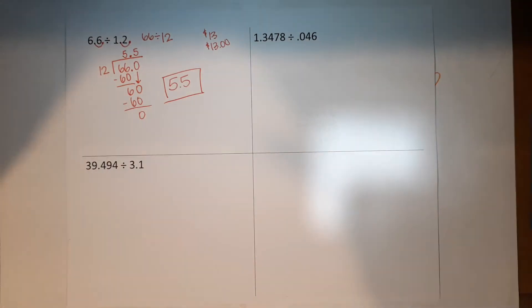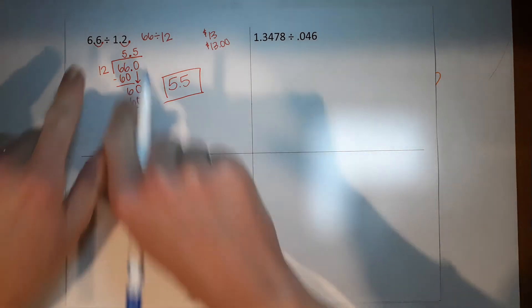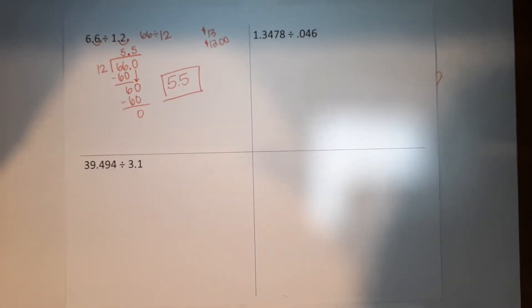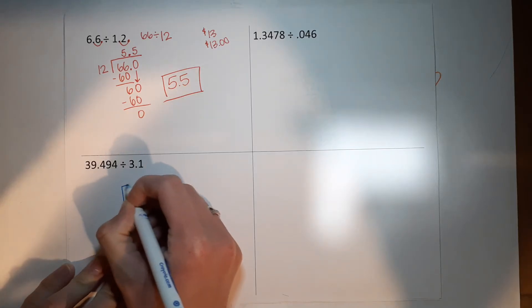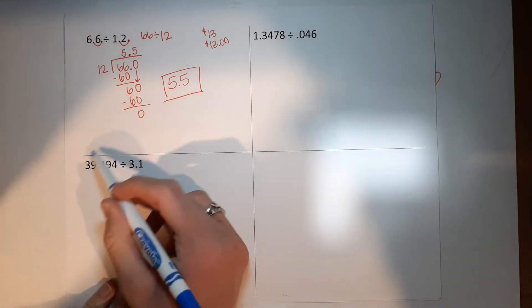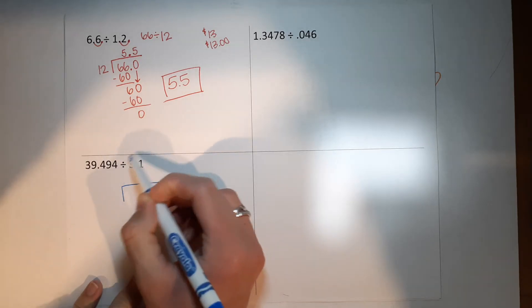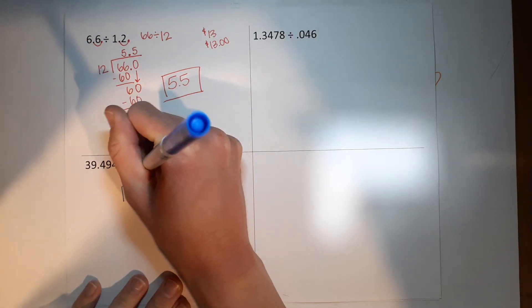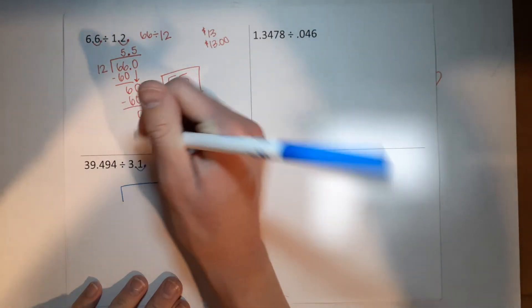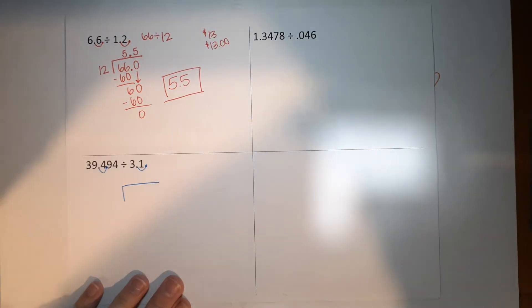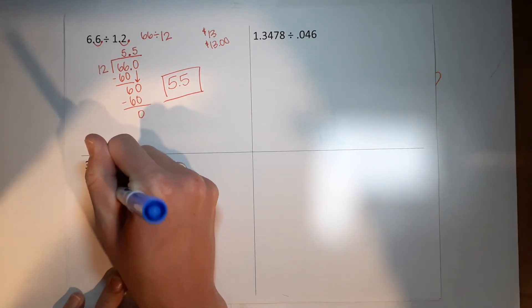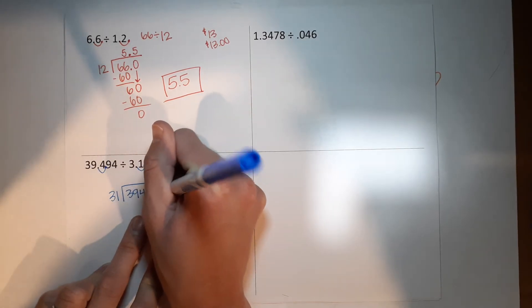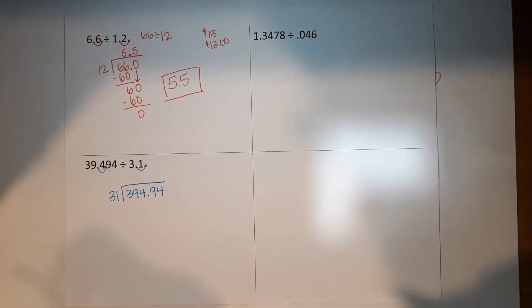All right, next one. Now this one's a little different. These ones both only had one number behind the decimal; these ones have more. So we'll show you how this works. Long division, first number goes inside, this one goes outside. I don't want my outside number to have a decimal. Inside one, sure; outside one, not so much. It's possible, but I just don't want to mess with it. So I'm gonna move it over once. If I move that one over, I gotta move this one over.